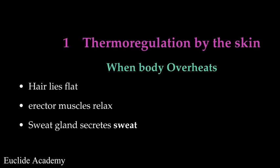Now let us discuss thermoregulation by the skin. Thermoregulation is simply maintaining a constant body temperature. When your body overheats — for example, you were running or you are in a hot environment — what happens to your body? What are the things your body has to do to help you cool down and maintain a constant body temperature? That is thermoregulation by the skin.